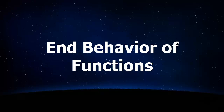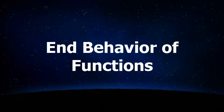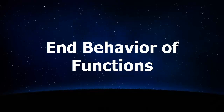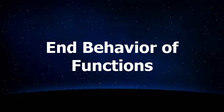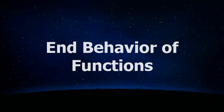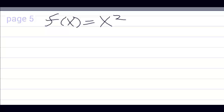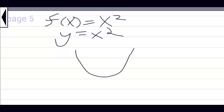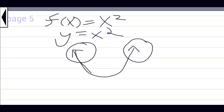Get to know your basic functions. There are two that you're going to use more than any other. f(x) = x², or y = x², looks like this — almost like a U, except that the arms go out to the left and right forever. This part of the graph is called the end behavior.